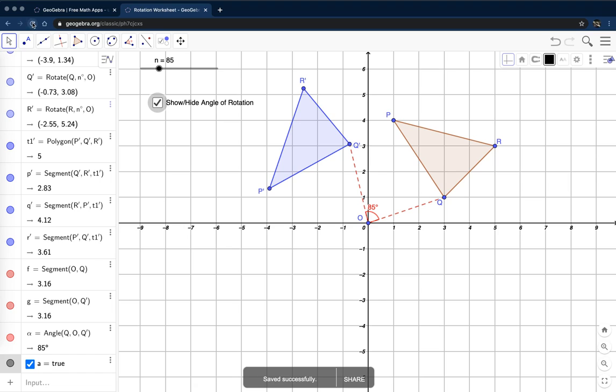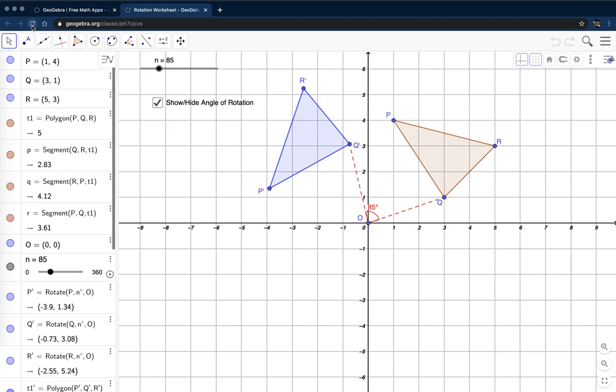Now, I'm going to hit my refresh button. If I hit my refresh button before I save, all of my work disappears. So it's important to save it first. Now, when I refresh it, there it's working. If I want to view the angle of rotation or hide it.